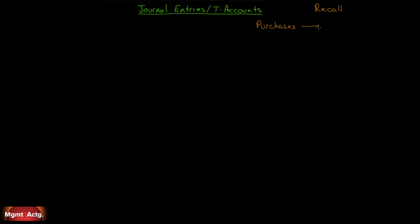Let's look at some journal entries and T-accounts. Journal entries and T-accounts are never done — ever. First, I want to draw something out that will serve you very well if you can remember it. Purchases flow into raw materials inventory. Raw materials flow out in two ways: either as direct materials, in which case they go right into work in process, or as indirect materials, in which case they go into manufacturing overhead.